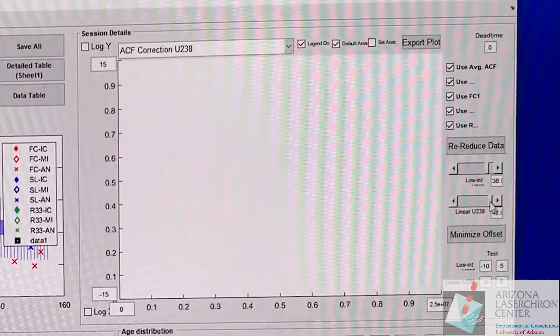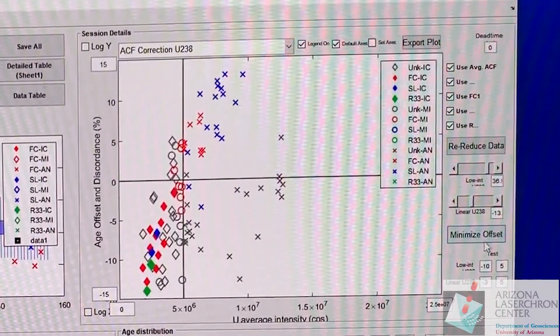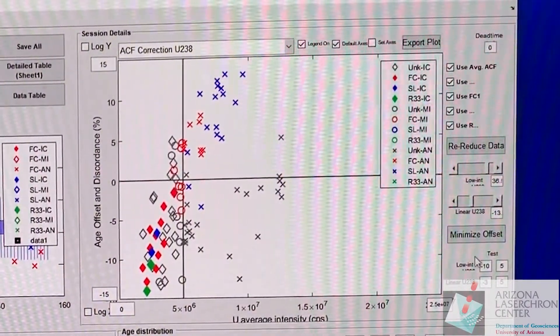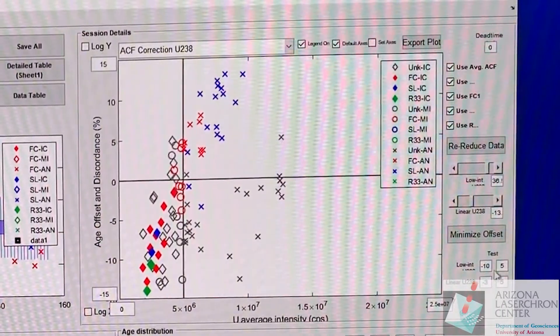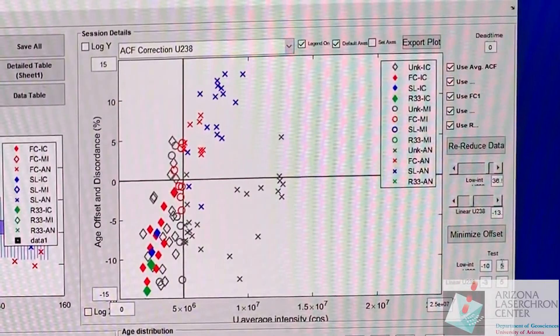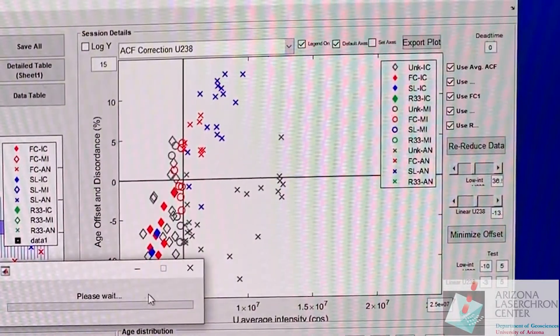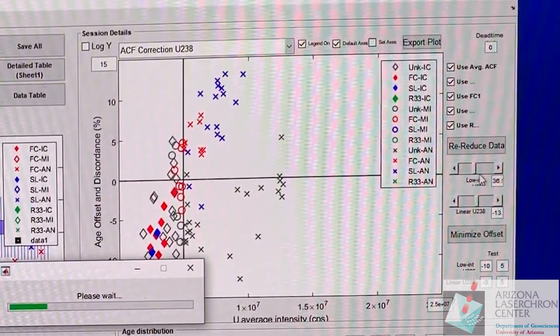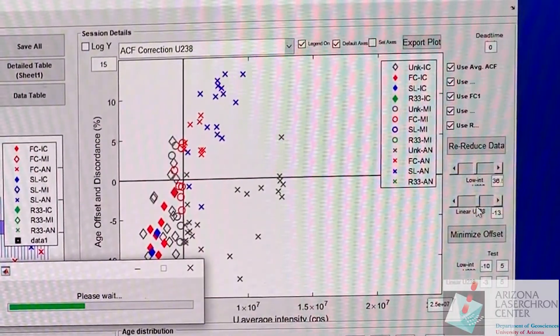You can play around with this and kind of do this subjectively or you can click on minimize offset. This is going to test the range of low int and linear 238 based on these ranges here. You can change these if you like to wider or narrower ranges, but just click on minimize offset.